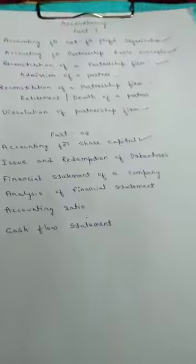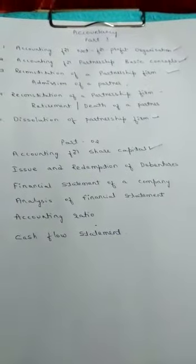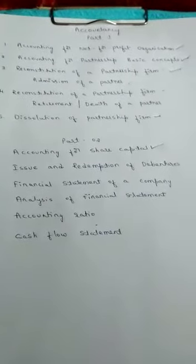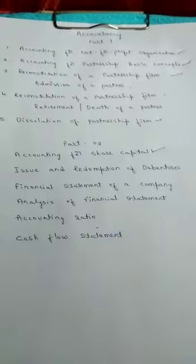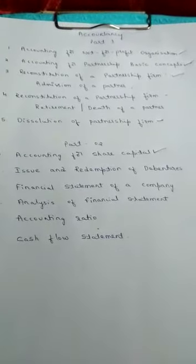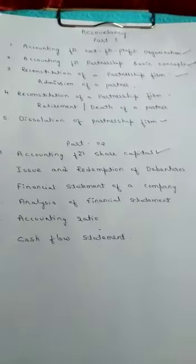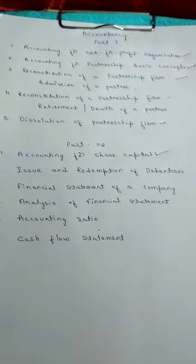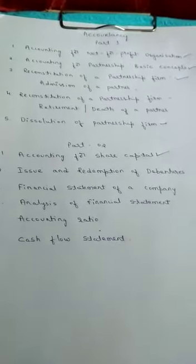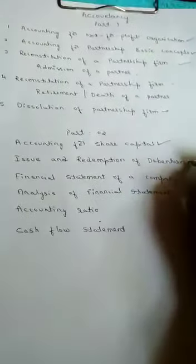Chapter 2 is related to issue and redemption of debentures. A company raises its capital by means of issue of shares. The company requires money for the long run; therefore, the company issues debentures. Debentures are also known as long-term debt. This chapter deals with the accounting treatment of issue and redemption of debentures, differences between shares and debentures, types of debentures, and terms of issue of debentures.